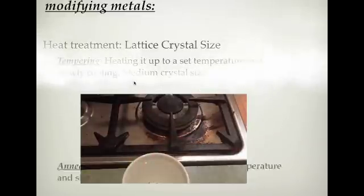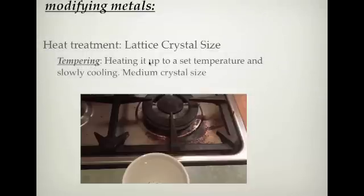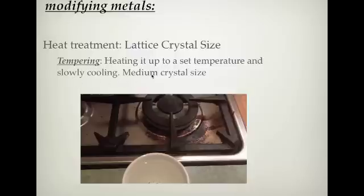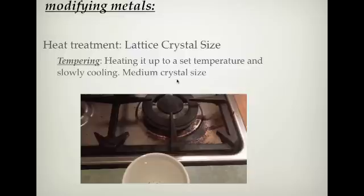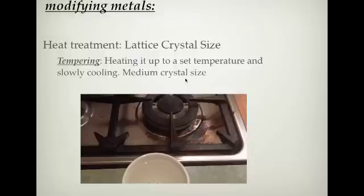The last heat treatment is tempering. Tempering involves heating to a set temperature and then cooling relatively slowly — a bit faster than annealing. This gives you a medium crystal size, which provides strength to the metal while also retaining some flexibility. Rather than being very bendy like an annealed metal, a tempered metal has strength but is not brittle — it doesn't just break. So the three types of heat treatment are: quenching, which gives a brittle metal; annealing, which gives a malleable, flexible, soft metal; and tempering, which gives a hard but malleable metal.